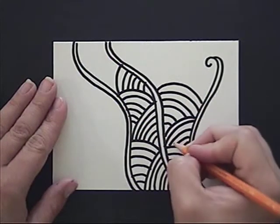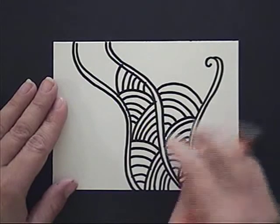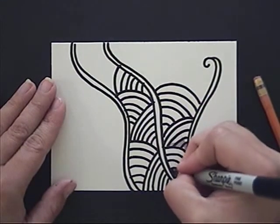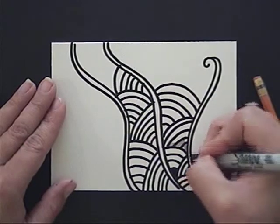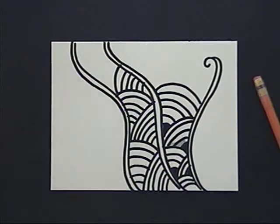You can also use a pencil and give it a little shadow if you would like. Or you can color in every other line. So maybe I'll color in all the triangles that were created, or make these so that they're alternating black and white. There's lots of different ways to change this one tangle. Go ahead and give it a try yourself.